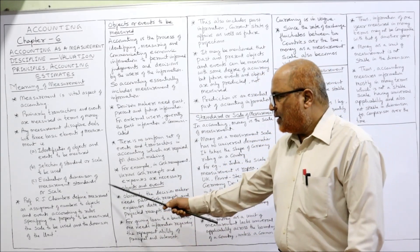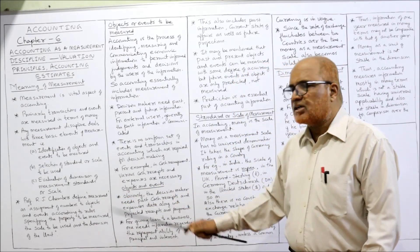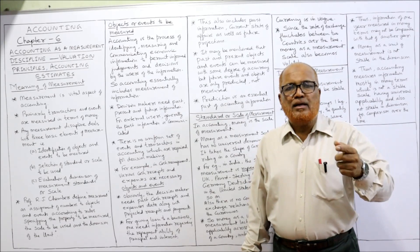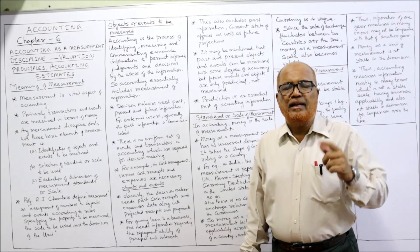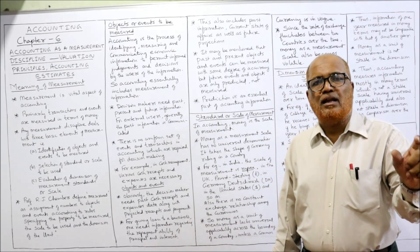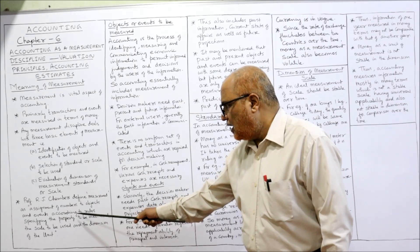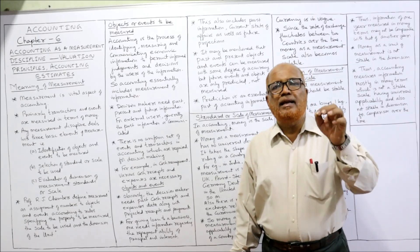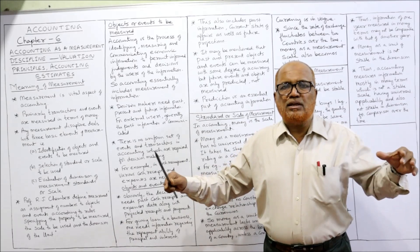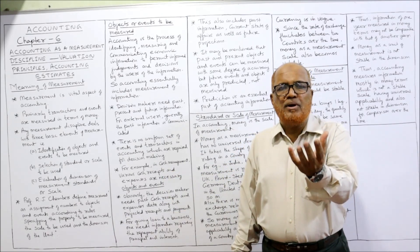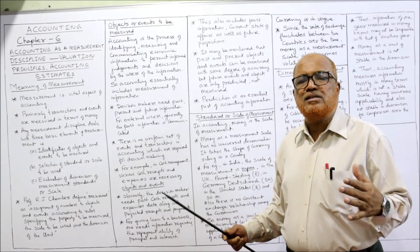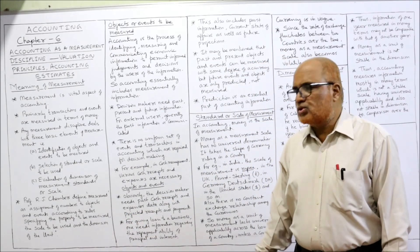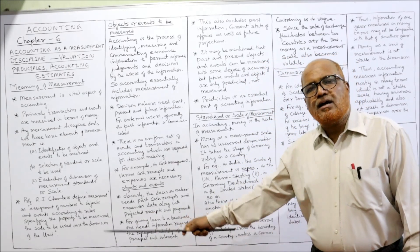Measurement means assigning a number — one kilogram, one pound, one meter, or one liter — to events and objects according to the rules specifying the property to be measured. For example, liquid is measured in liters and cloth is measured in meters. We have to find out which is the appropriate measure, specifying the property to measure, the scale to be used, and the dimension of that unit. This is the complete definition, containing all three ingredients.